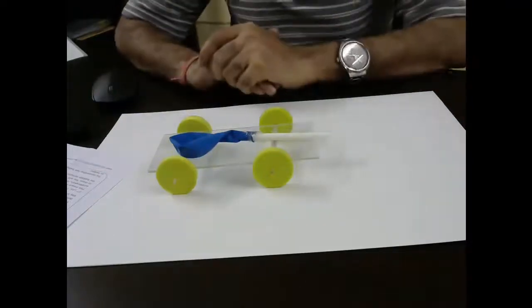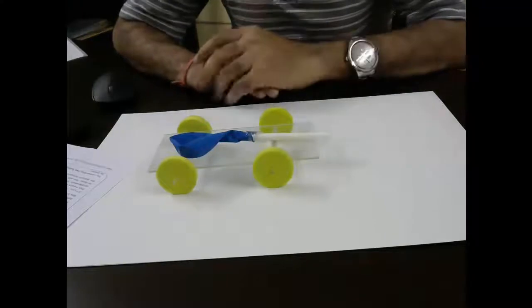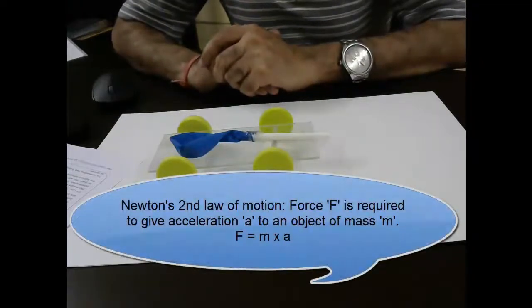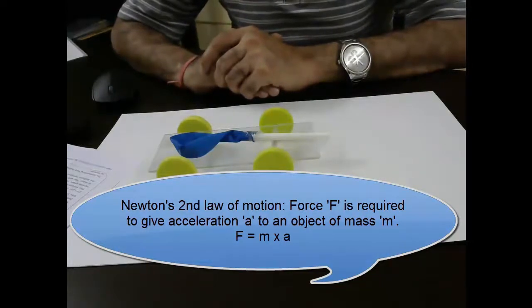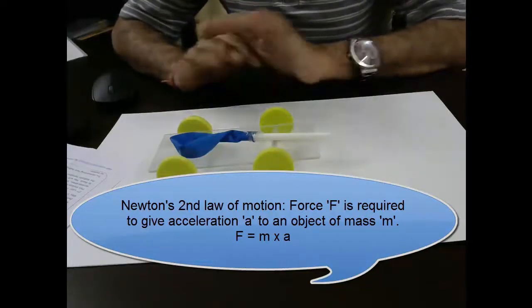Then come to the second law which is a little more difficult to understand. The second law says that force F is required to give an acceleration A to an object of mass M. Sounds complicated?